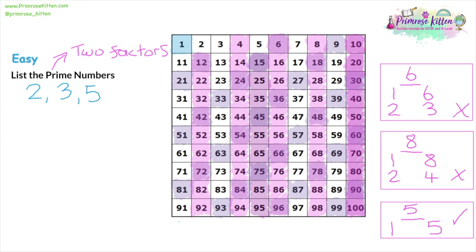Moving on to six — that's already coloured in, so it's not going to be a prime number. Then moving on to seven: we can divide seven by one and the answer is seven, giving us two factors. It hasn't been coloured in for the two, three, or five times tables, so it can't be divided by those numbers either. So seven must be a prime number, and we colour in the seven times table.